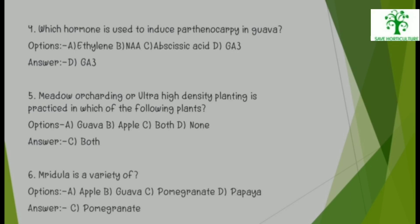5. Meadow orcharding or ultra high-density planting is practiced in which of the following? Options: Guava, Apple, Both, or None. The right answer is Both — Guava and Apple. 6. Mridula is a variety of Apple, Guava, Pomegranate, or Papaya? The right answer is Pomegranate.